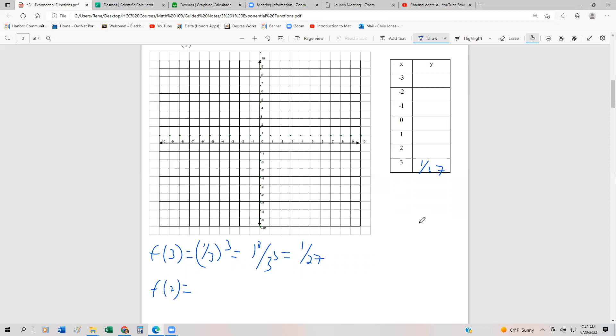At 2, that's going to be one-third squared, which is one-square over three-square, or one-ninth.